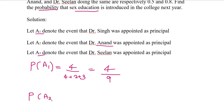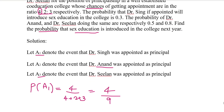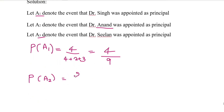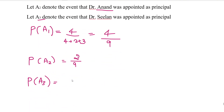P(A2) is the probability of Dr. Anand's appointment. The ratio value for the second person is 2, so P(A2) equals 2 divided by 9. Similarly, P(A3) is the probability of Dr. Seelan's appointment, which is 3 divided by the sum of the ratios, that is 3 divided by 9.